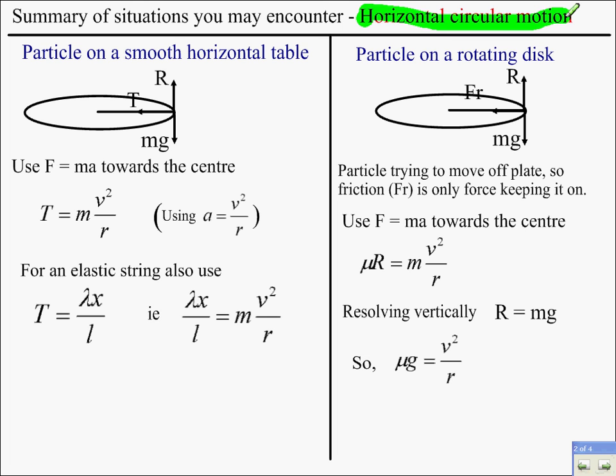Horizontal circular motion. If we have situation 1, smooth horizontal table, you have R acting up, the normal reaction, weight acting down. They would be equal, obviously, as the particle is not moving upwards or downwards from the table. Use F equals ma towards centre. That is pretty key. That's something that you pretty much always do.